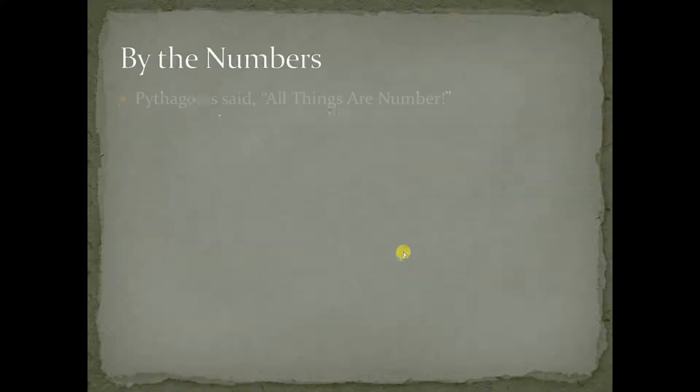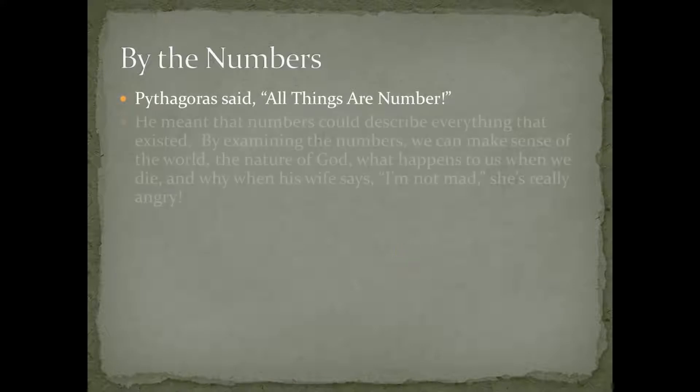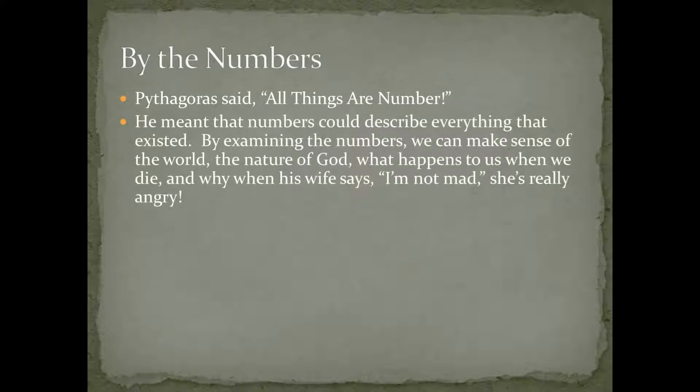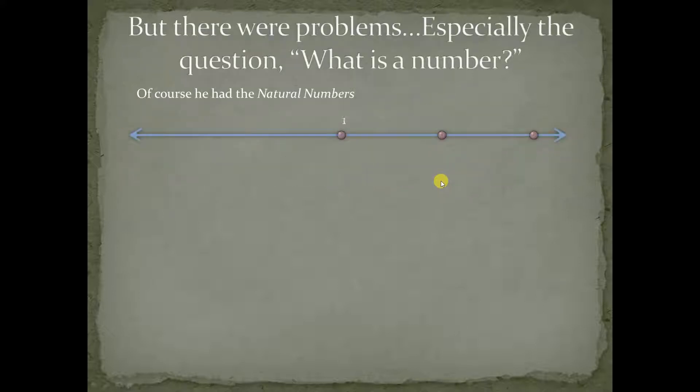Pythagoras said everything was a number. And what he meant was that because we can understand numbers and we can apply numbers to real world situations, and we can never understand everything about numbers, we can also understand everything about real world situations. Like, why my wife says I'm not mad when she really is. What about numbers? So, the numbers that Pythagoras had is what caused him to have some trouble.